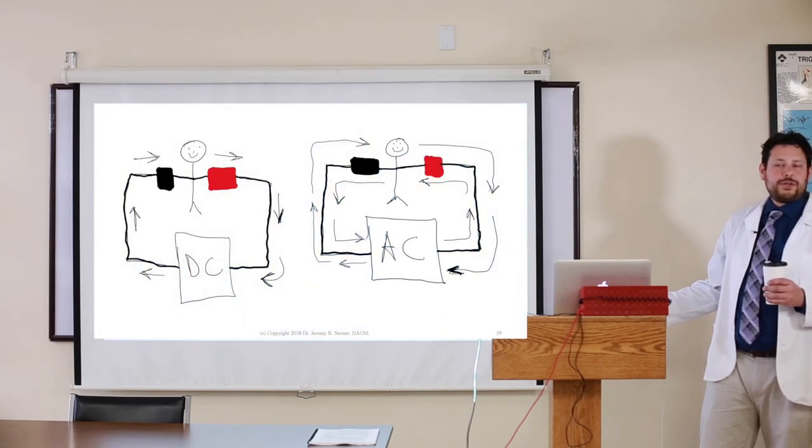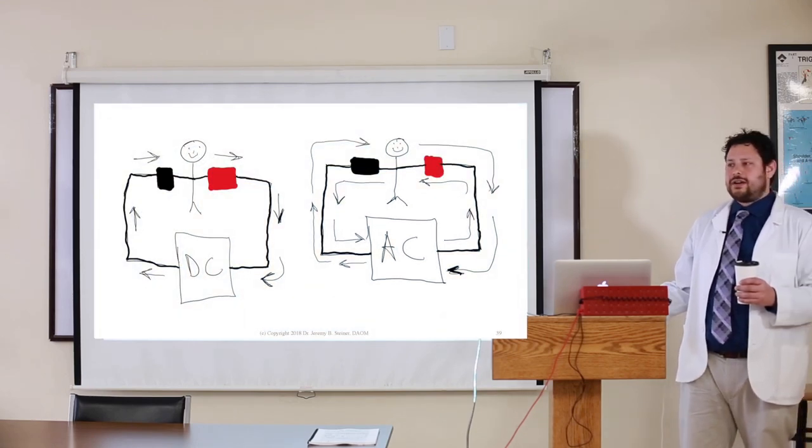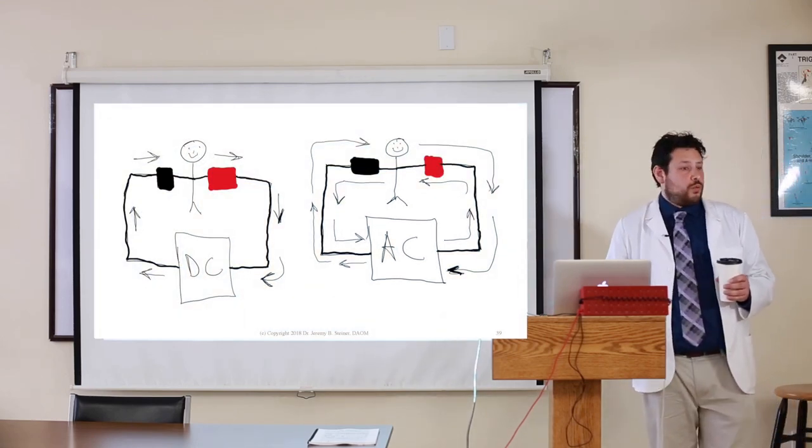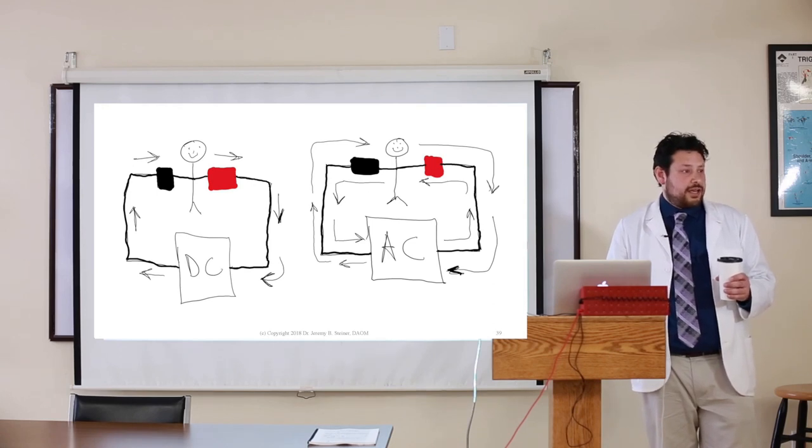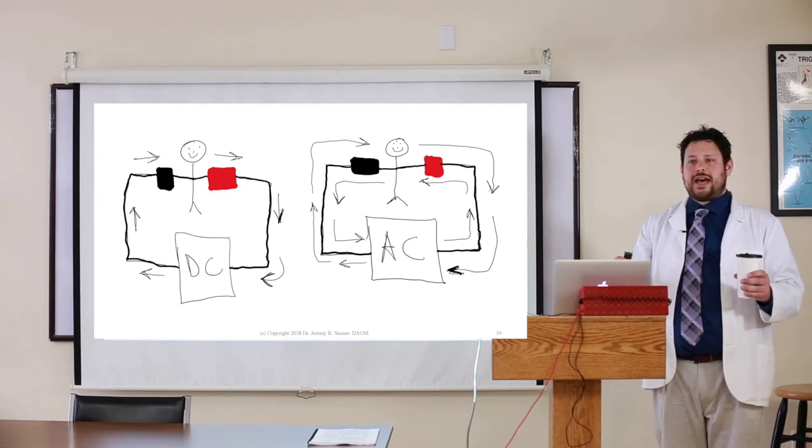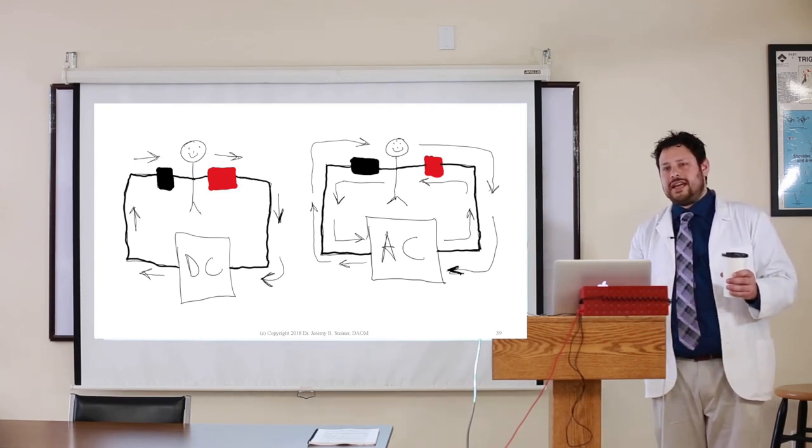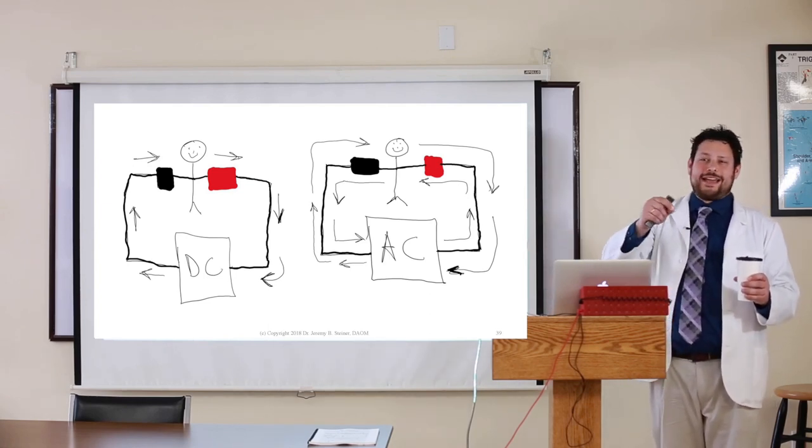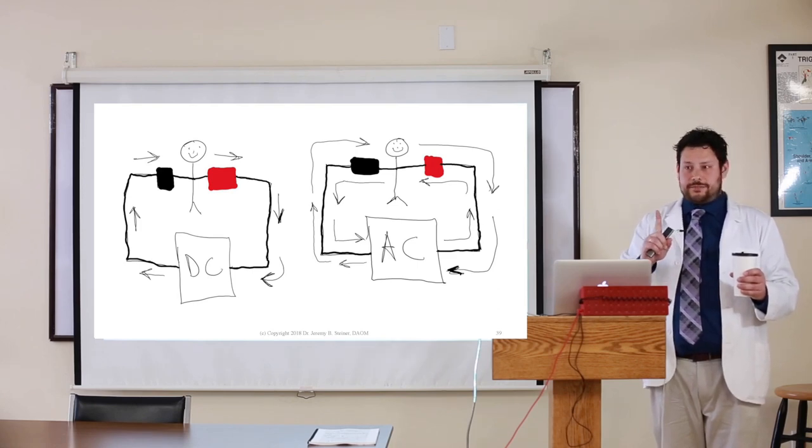This is why our machines are biphasic and it doesn't matter much where the black and the red are, because first the electrons are pulsing out of the black into the body, into the red, into the machine, and then out of the red into the black and into the machine. That's one cycle.